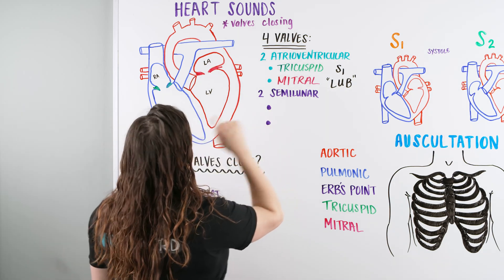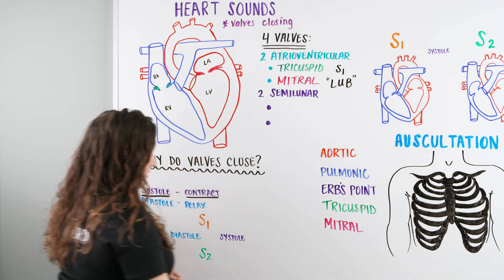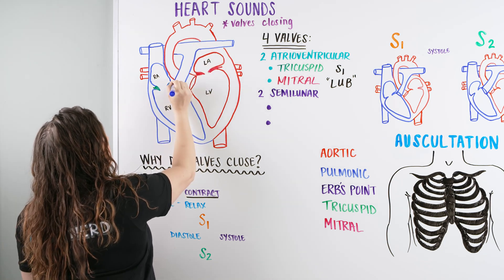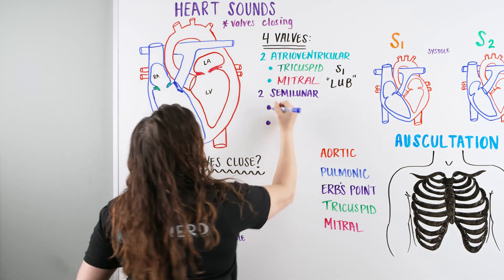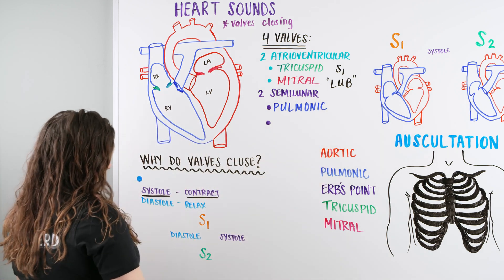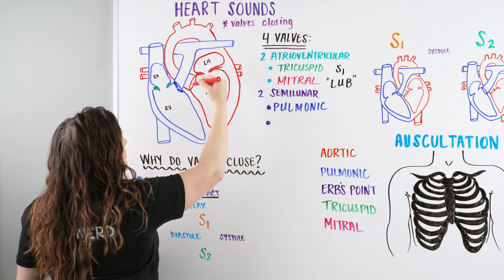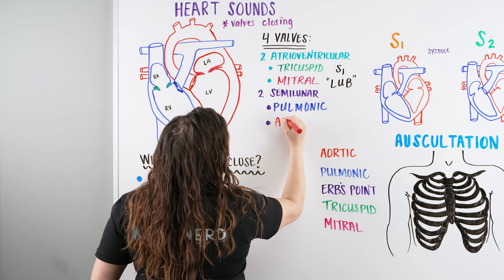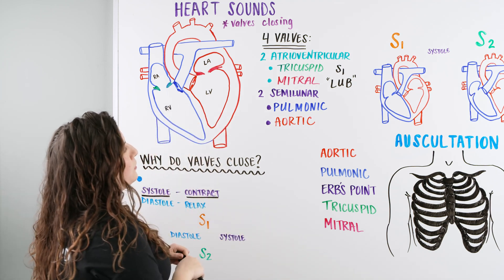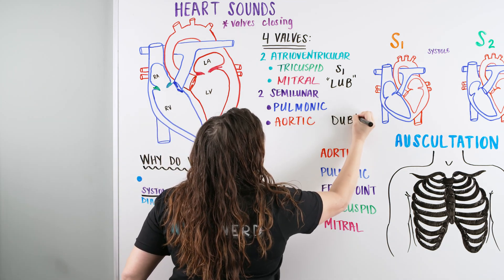Then we move on to our two semilunar valves. These are the valves that connect our heart chamber to the rest of the circuit. On the right side, the right ventricle pushes blood out through the pulmonic trunk — so that semilunar valve is our pulmonic. On the left side, blood goes through the left ventricle and out into our systemic circuit through the aorta — that valve is the aortic. The semilunar pulmonic and aortic valves close at the same time, making our 'dub' sound, which we call our S2.